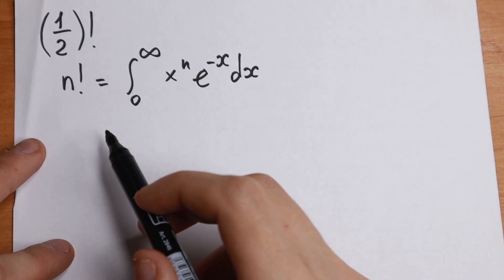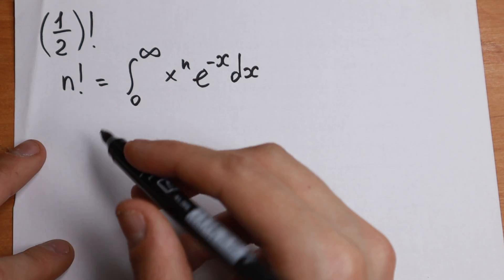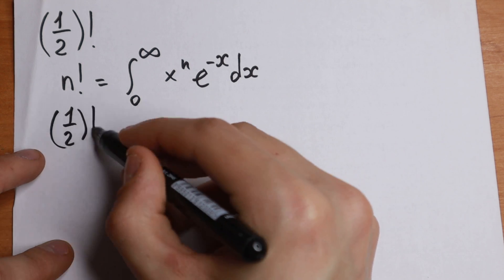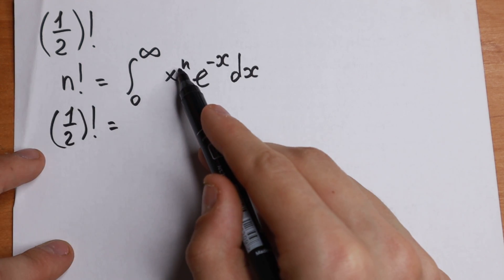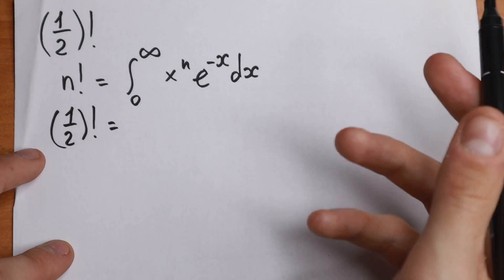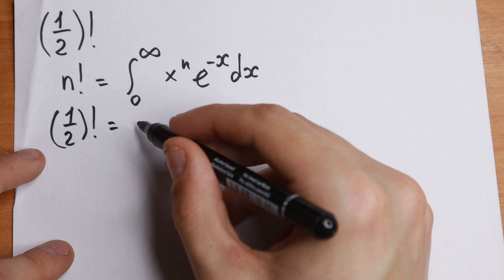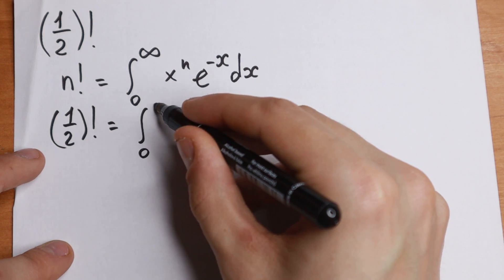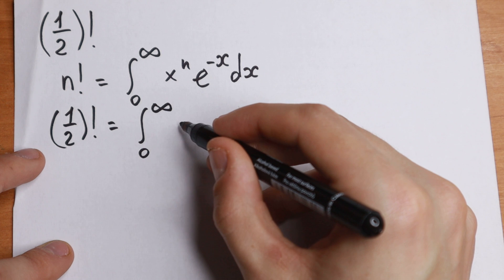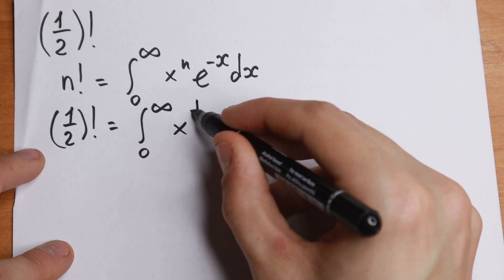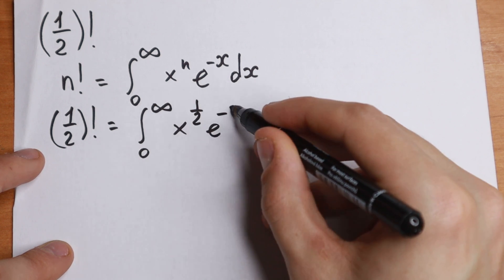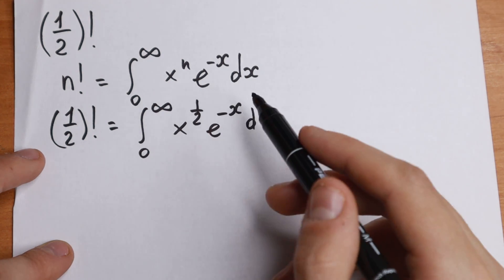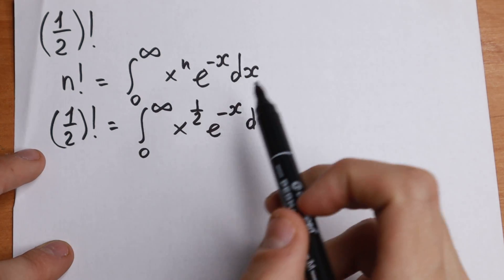We need to find one-half factorial. So let's find one-half factorial — we put one-half in place of n, because we want to find one-half factorial. This equals the integral from 0 to infinity of x to the power one-half, e to the power minus x, dx.